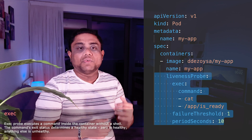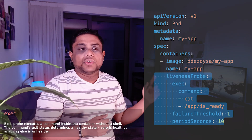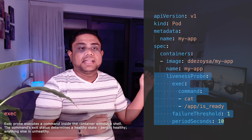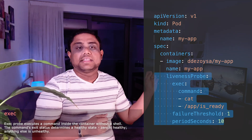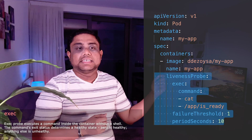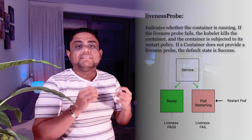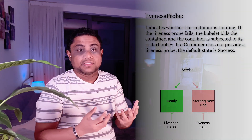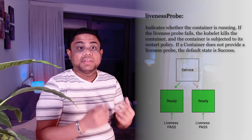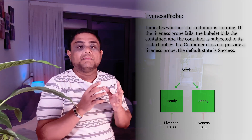When you want to perform health checks by executing an arbitrary command, you can follow this example. You can see that exec will be the type, and under that you can define the command. Based on the command's return code, Kubernetes will identify the application's health. When you define the liveness probe with either one of the check types, what will happen when the liveness probe fails?